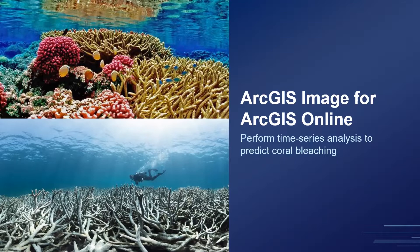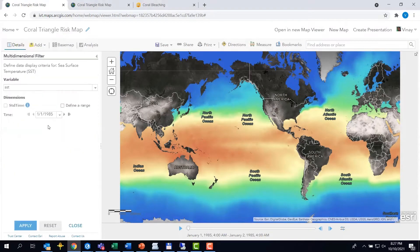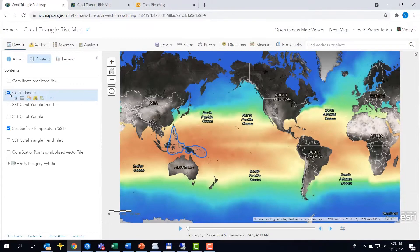You've probably seen me show this example in the past, but I've shown this powerful piece of analysis done using ArcGIS Pro and ArcGIS Enterprise. Now, this robust analysis can be performed completely in a web-based SaaS environment — there is no infrastructure needed to stand up for processing. For my analysis, I'll use the sea surface temperature dataset from the Living Atlas.